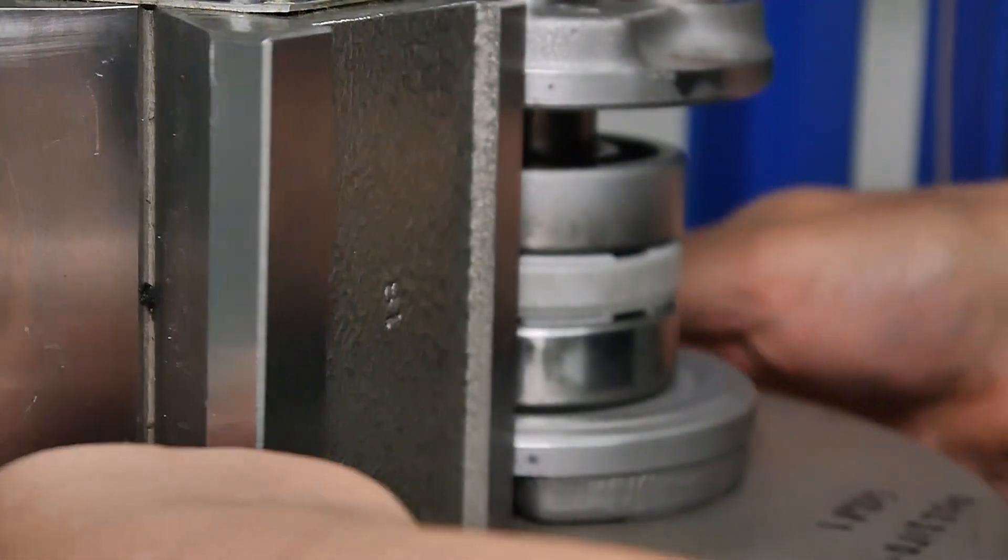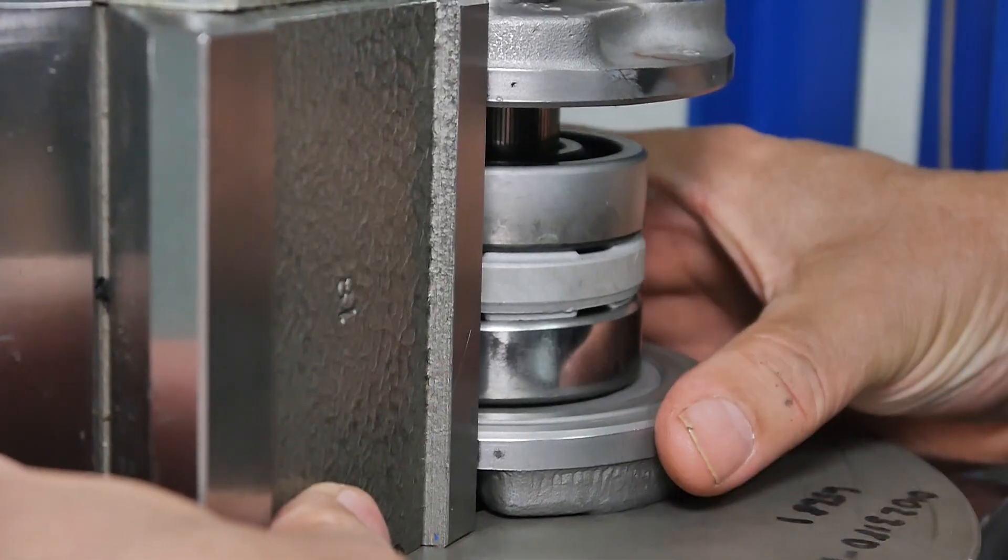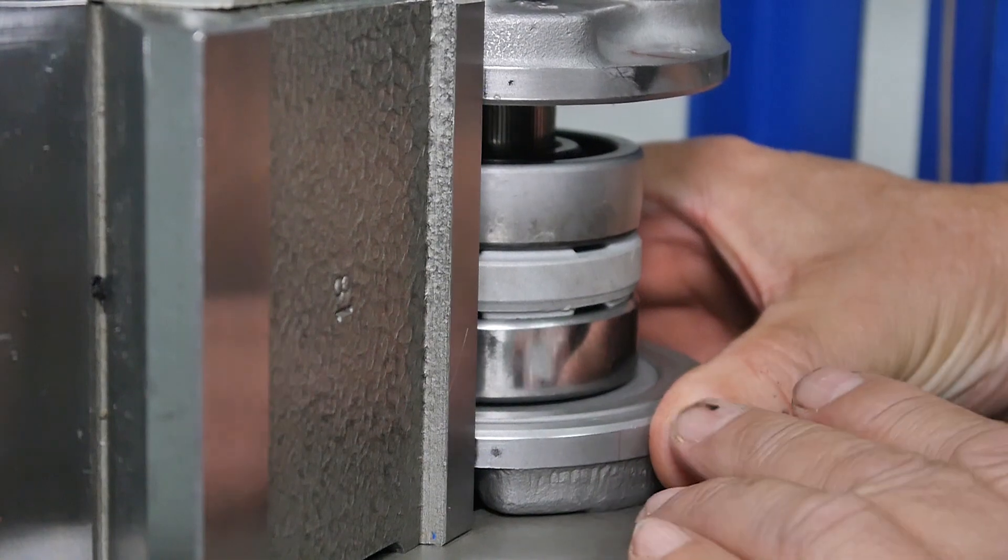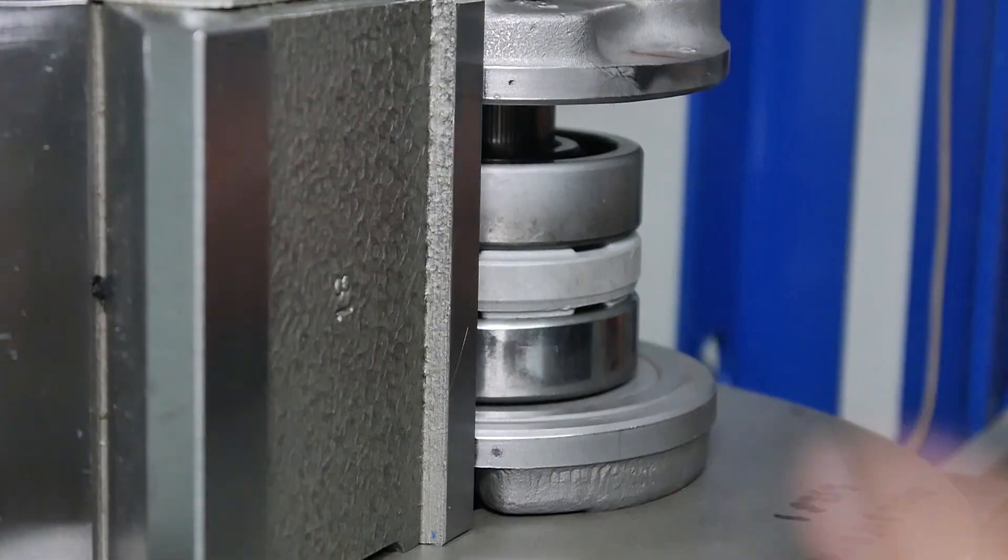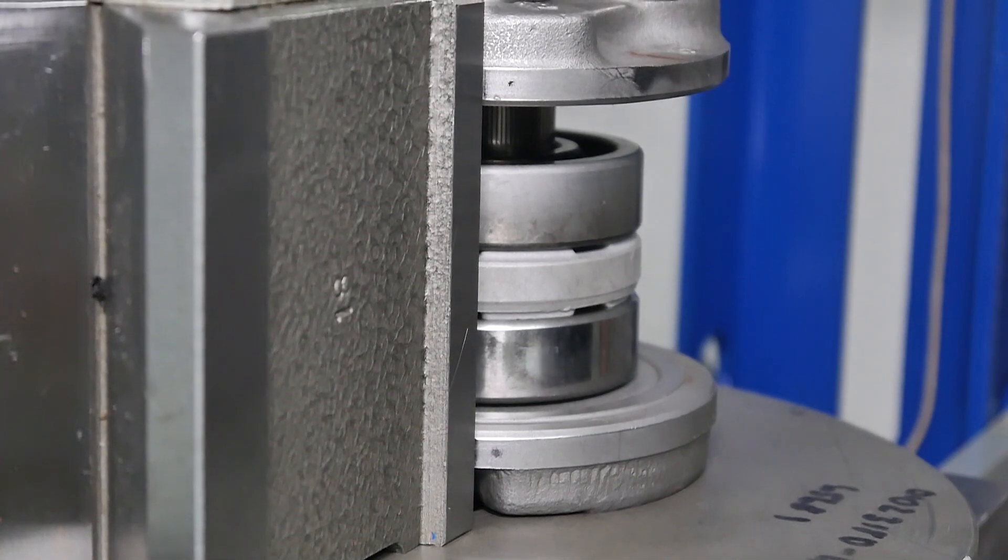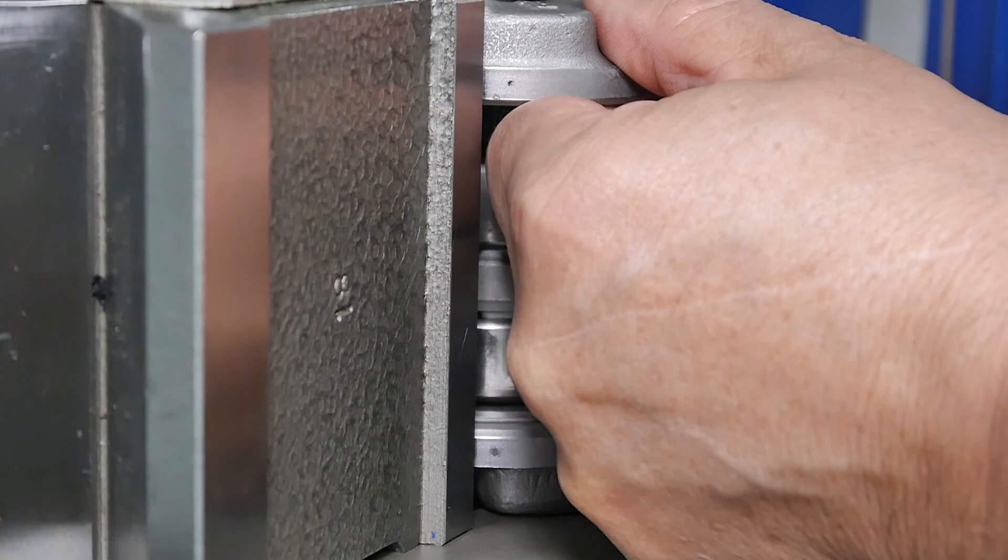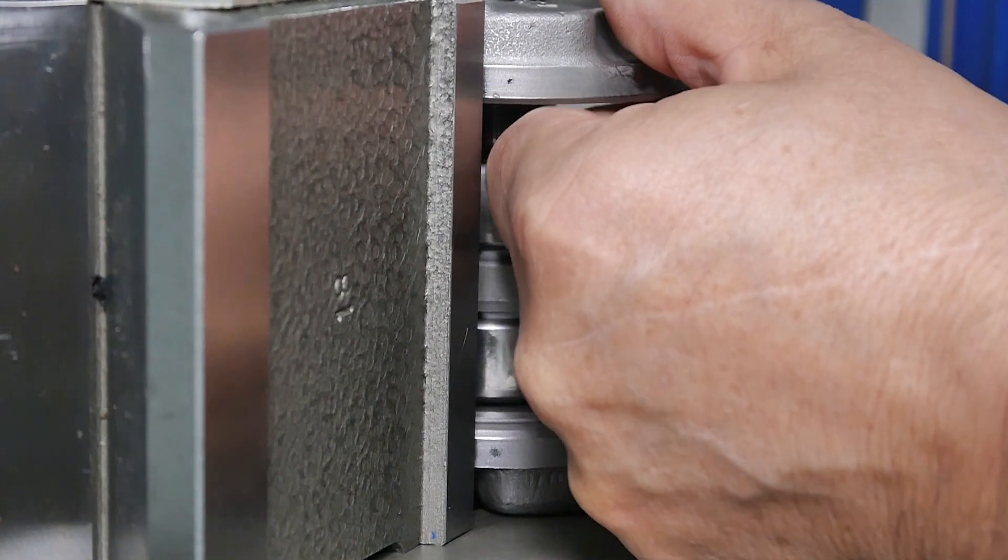Then line the ram, try and get that in the middle if you can, and double check the marks again just here. You'll see they're perfect there. So now use the double speed ram to quickly just centralize it.